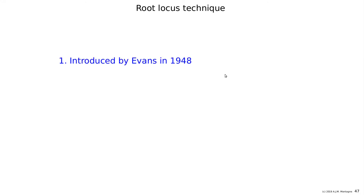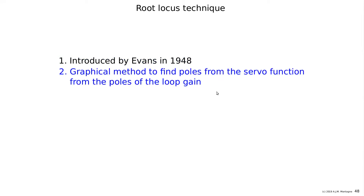The root locus technique was introduced in 1948 by Evans. It is a graphical method to find the poles of the several function from the poles of the loop gain. In control theory, this is called finding the poles of the closed loop gain from the open loop gain, but we use the terms 'several function' and 'loop gain'.